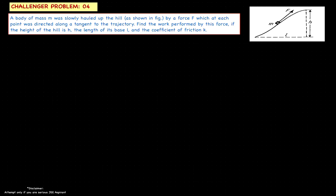Hello students, welcome to a new question from the challenges series of accelerated physics. The question is: a body of mass M was slowly hauled up the hill as shown in the figure by a force F, which at each point was directed along a tangent to the trajectory. Find the work done by this force if the height of the hill is H, the length of its base is L, and the coefficient of friction is K.